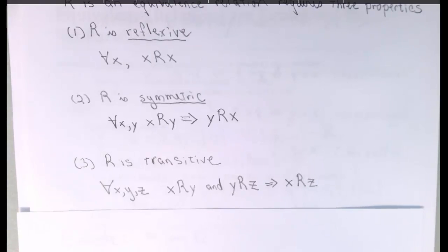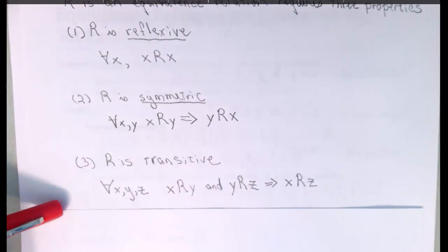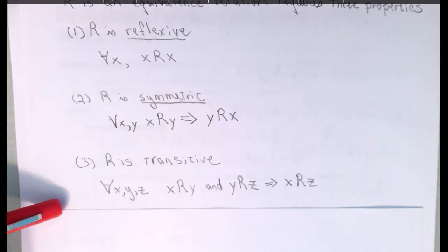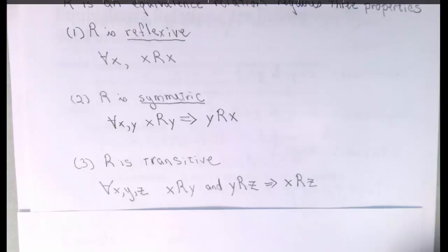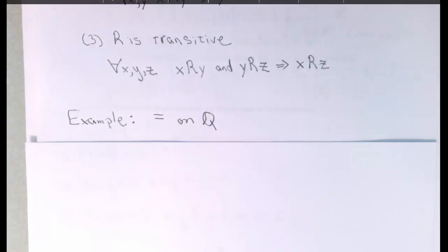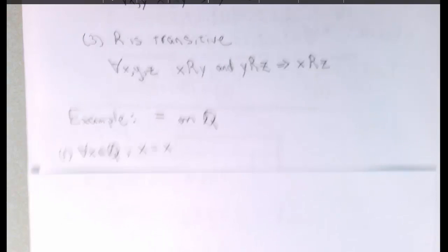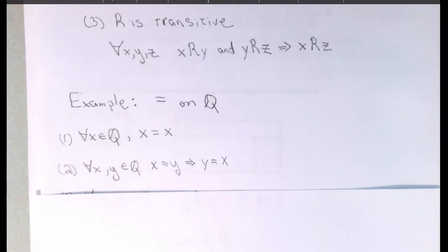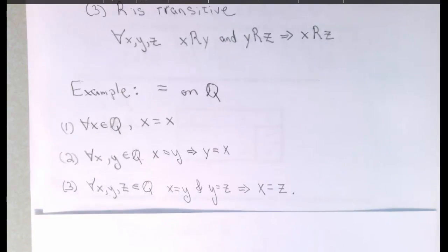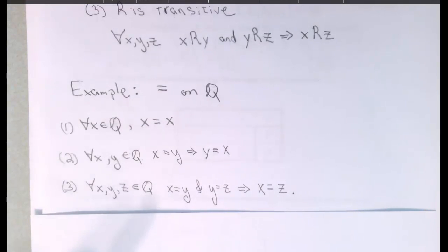It's these properties together that make a binary relation an equivalence relation. Let's look at an example. Take the equality relation on the set of rational numbers. It's certainly true that every rational number is equal to itself; if x is equal to y, then y must be equal to x; and if x is equal to y and y is equal to z, then x must be equal to z. That shows that equality on the rational numbers is an equivalence relation.